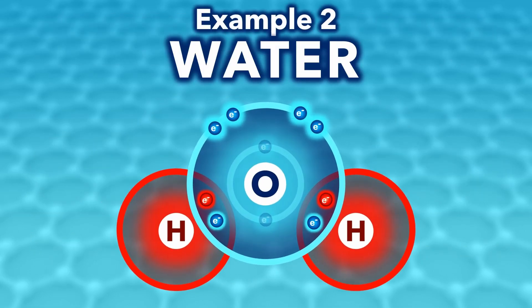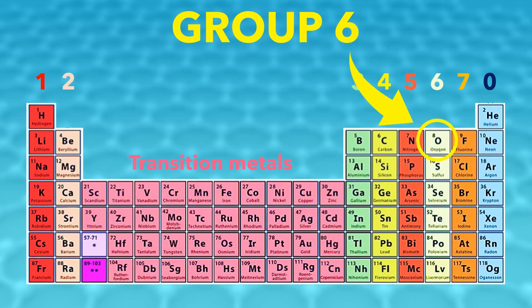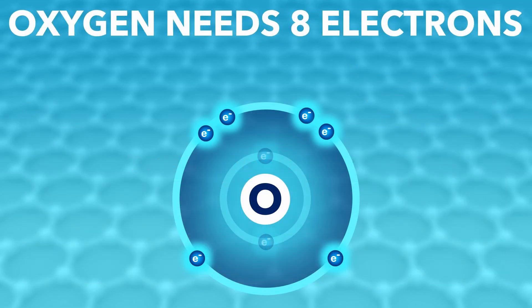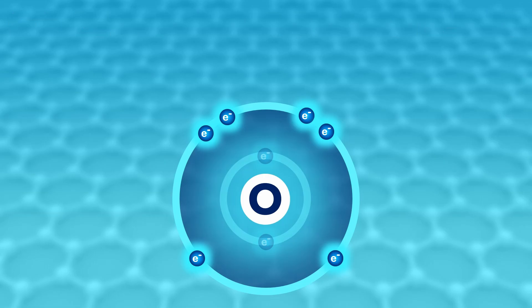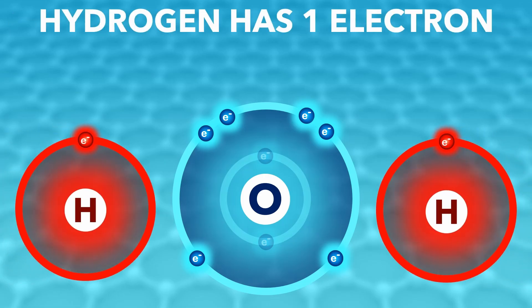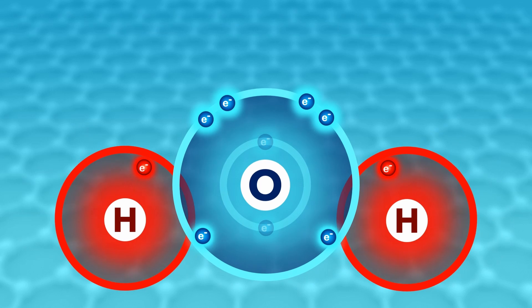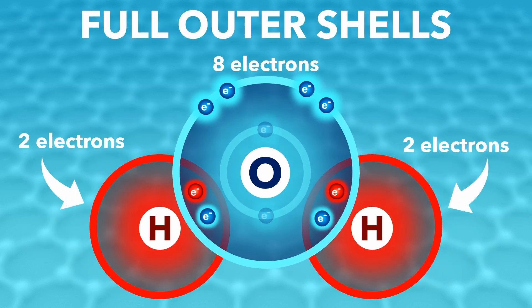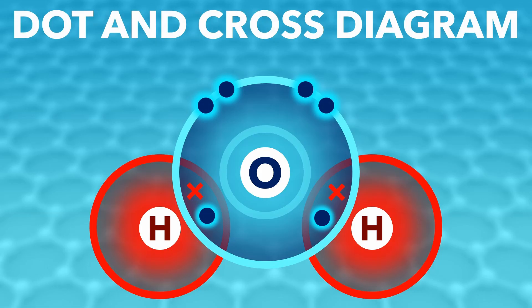Another simple covalent compound is water. Oxygen is in group six, so it has six electrons in its outer shell, but it needs eight for a full outer shell. And again, hydrogen has one but needs two. So the oxygen creates one covalent bond for each hydrogen. And now they all have full outer shells and everyone's happy. Here's the dot and cross diagram showing only the outer shell electrons.